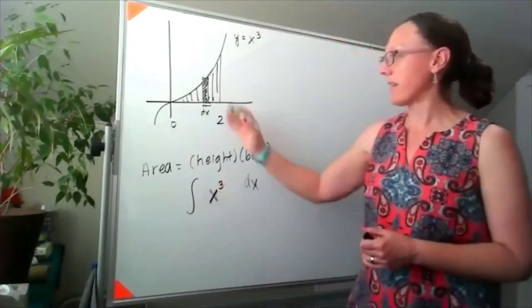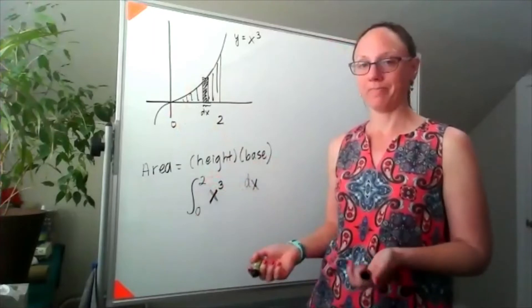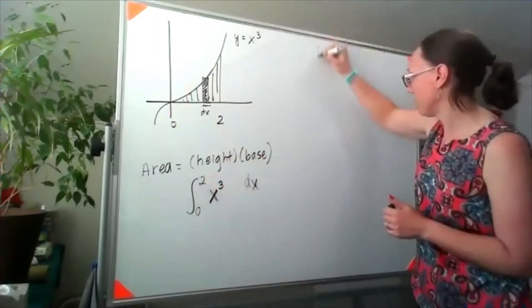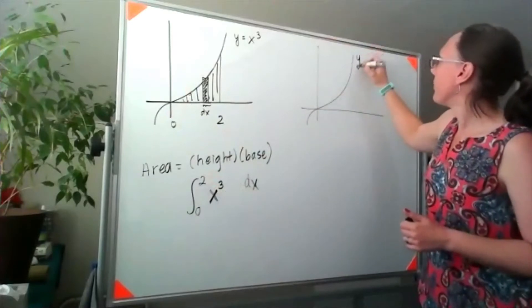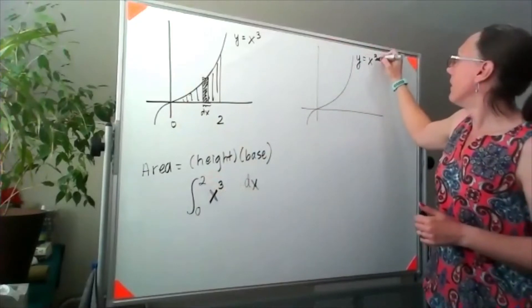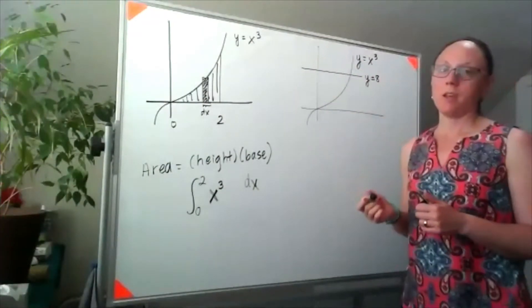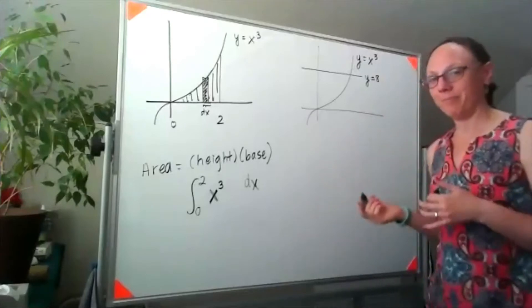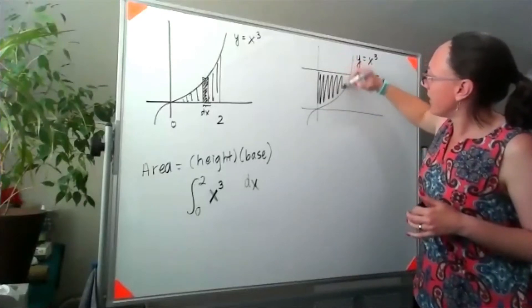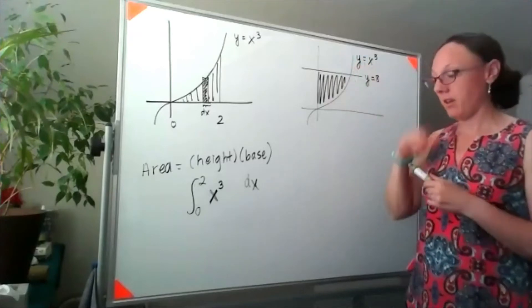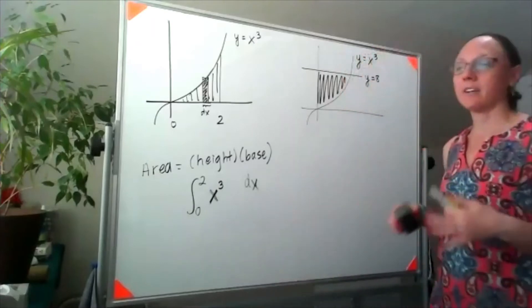We're going to take these rectangles as far to the left as 0 and as far to the right as 2. What if instead I wanted to find this area in here? I can do the same thing that we did at the beginning of chapter 5.